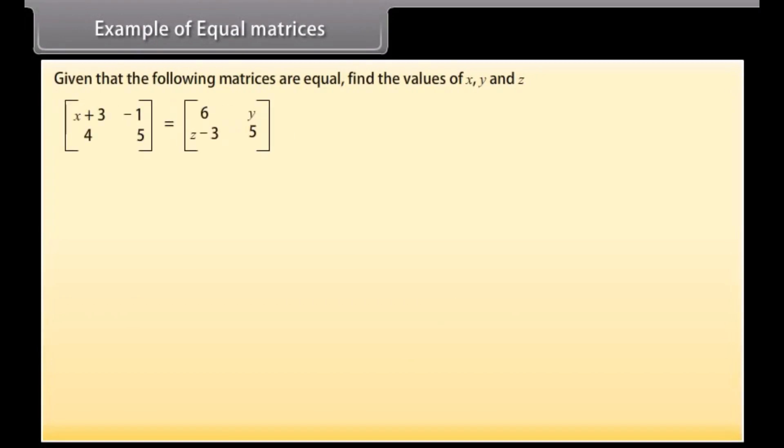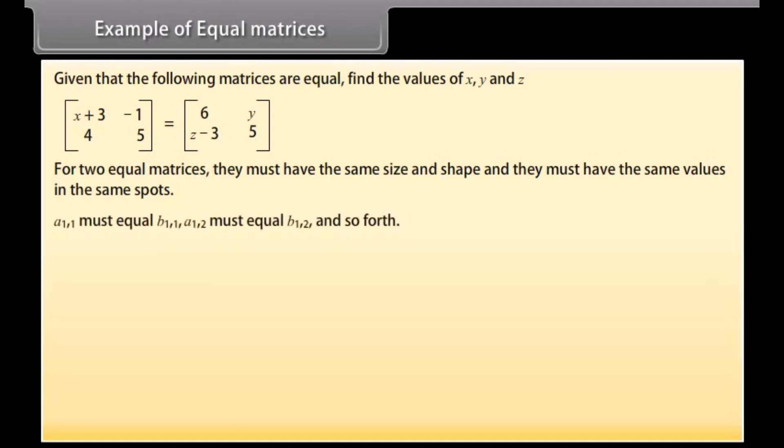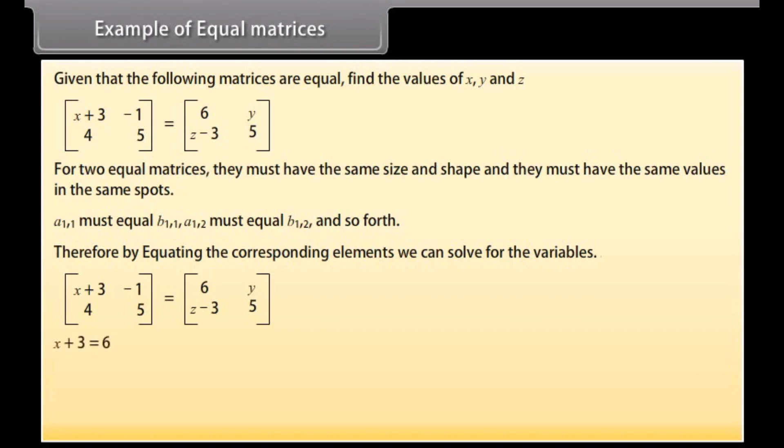Example of equal matrices. Given that the following matrices are equal, find values of X, Y and Z. For two equal matrices, they must have the same size and shape and they must have the same values in the same spots. Or, we can say A11 must be equal to B11, A12 must be equal to B12 and so forth. Therefore, by equating the corresponding elements, we can solve for the variables. X plus 3 is equal to 6, X is equal to 3. Y is equal to minus 1. Z minus 3 is equal to 4, Z is equal to 7.